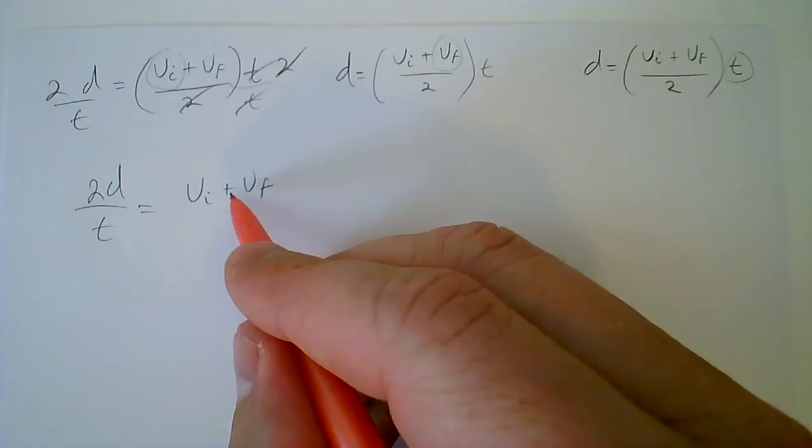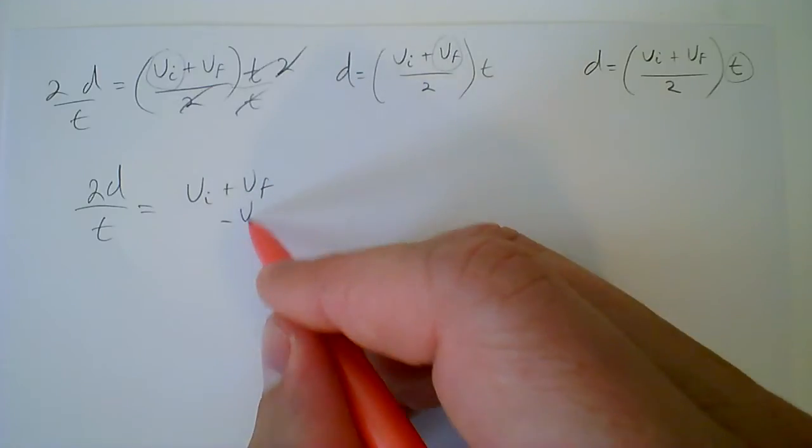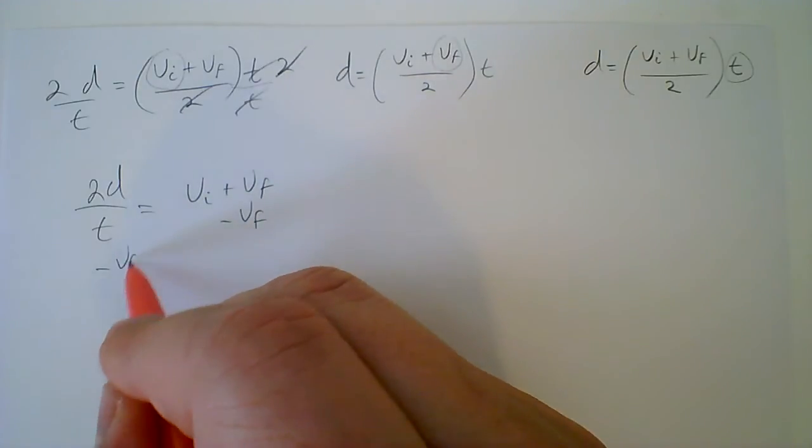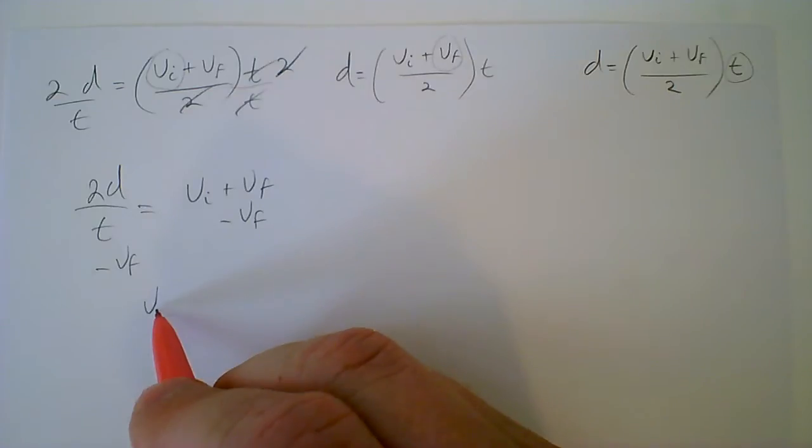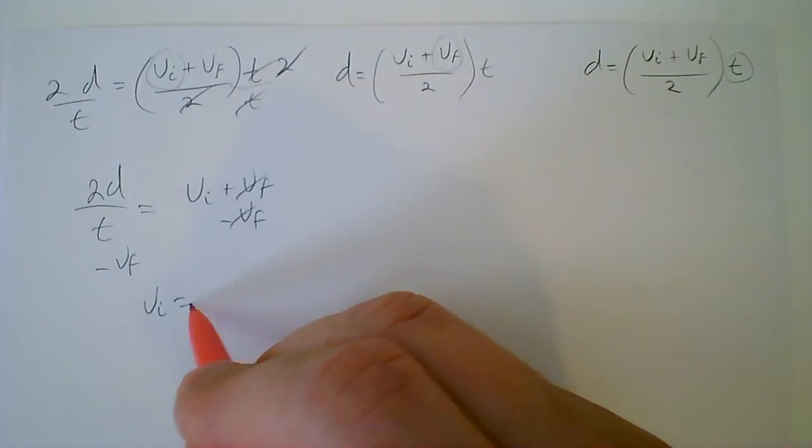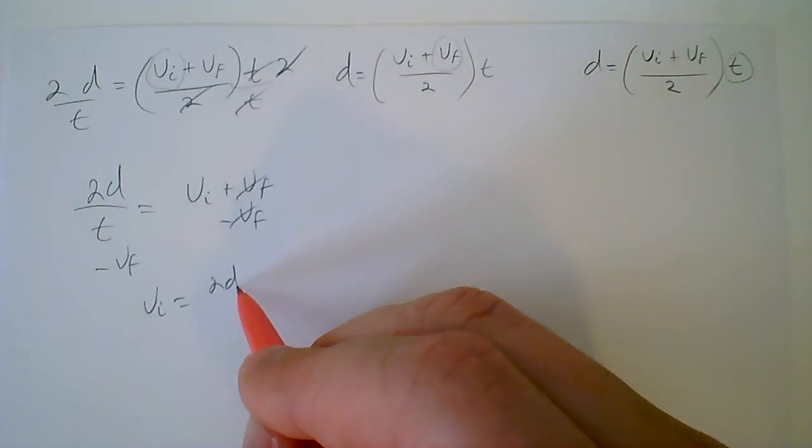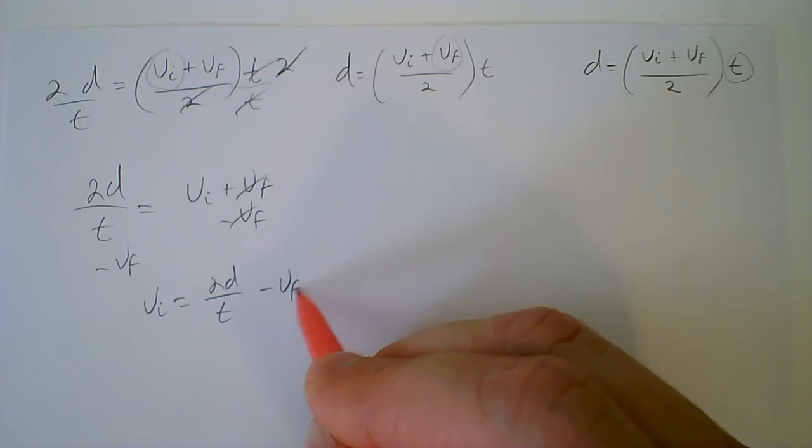Now all I have to do is subtract vf from both sides, minus vf, and you get vi equals 2d over t minus vf.